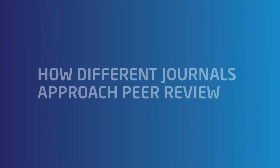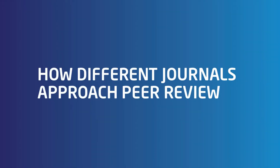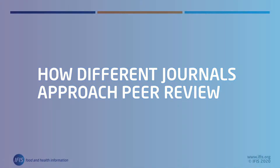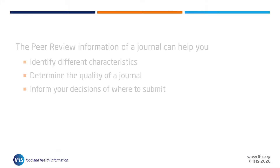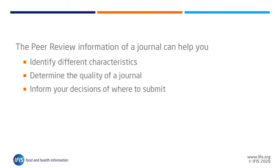In this part of our expert guide to journal publishing, we look at different approaches to peer review and the ways you can identify characteristics of journals that might help determine the quality and inform your decision on where to submit.